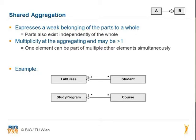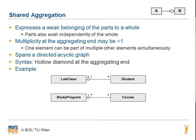This concept spans a directed acyclic graph and the holodiamond at the aggregated end has to be modeled. For example, student is part of lab class and a course is part of study program.